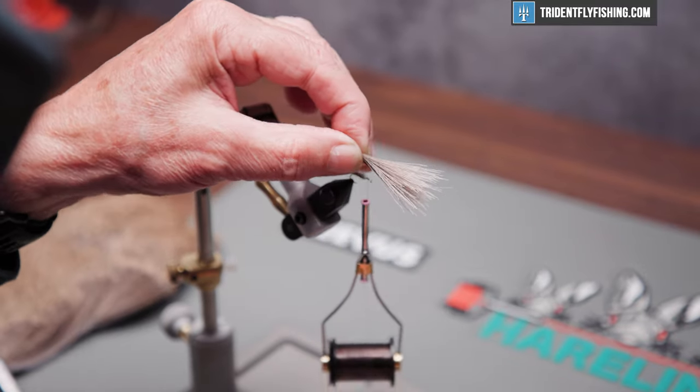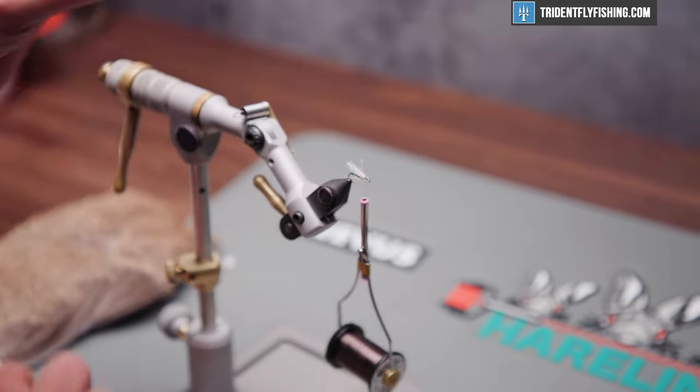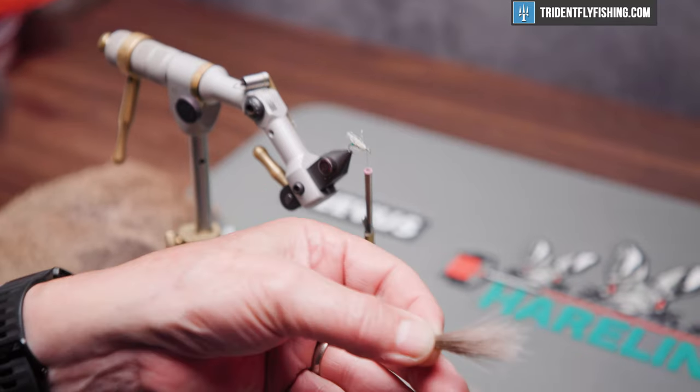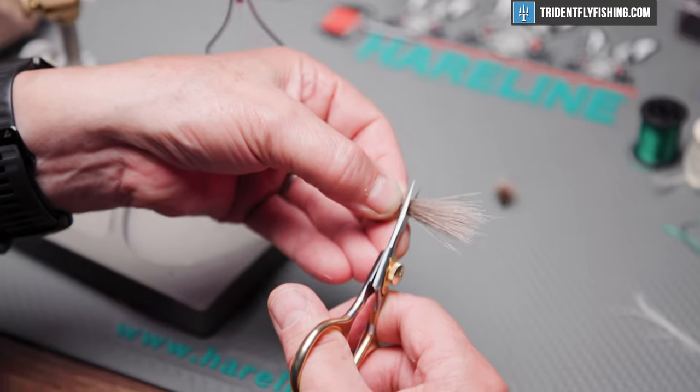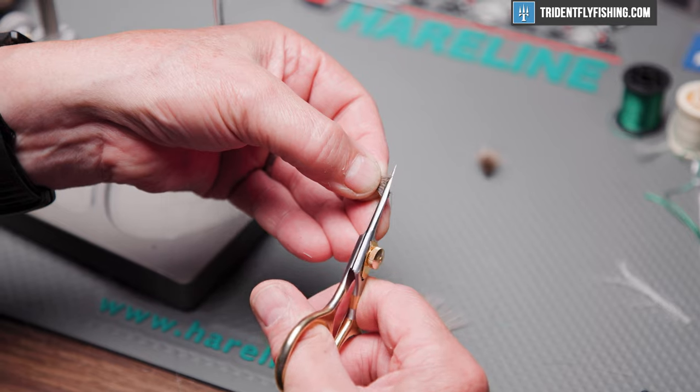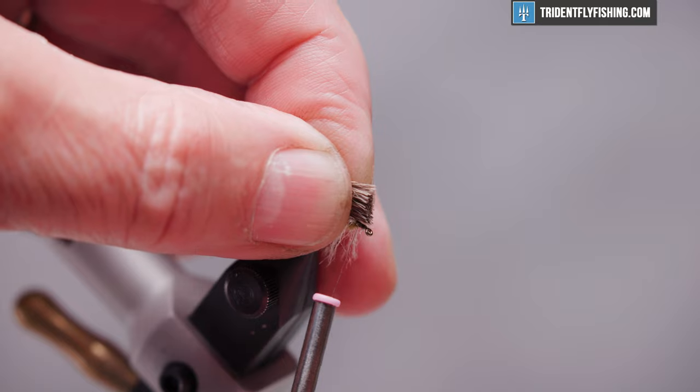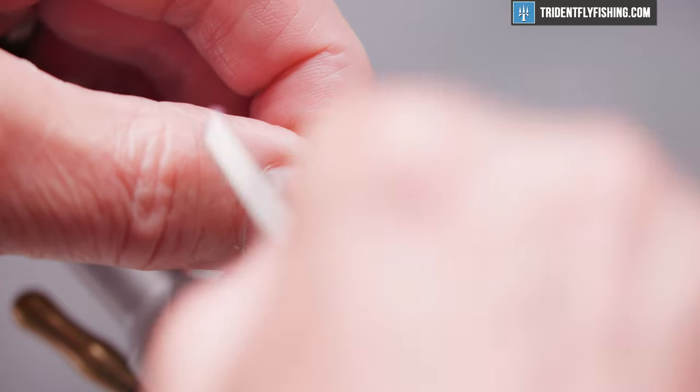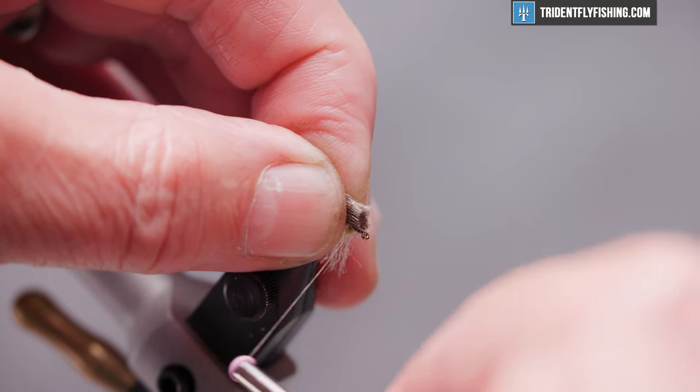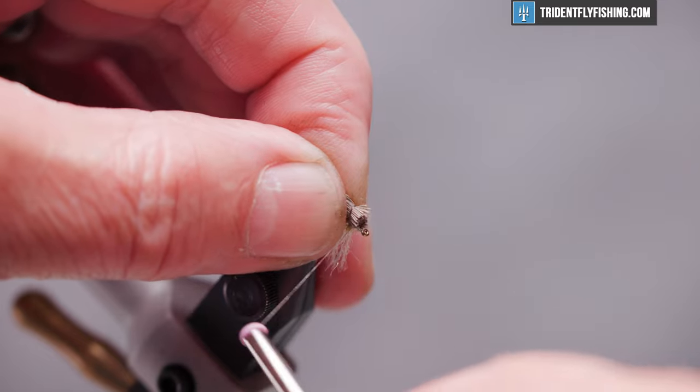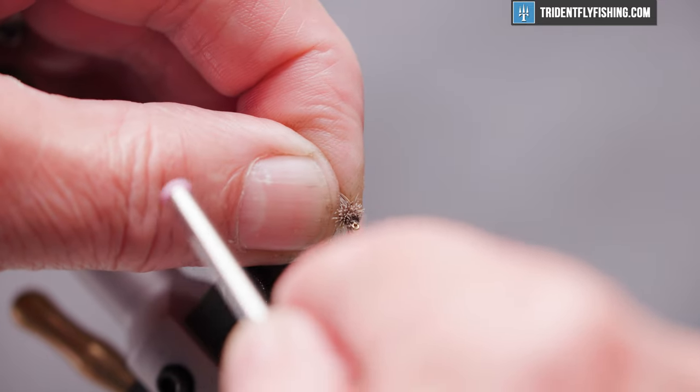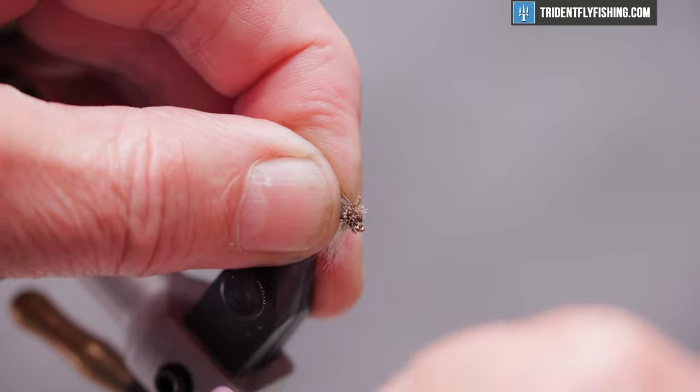And I like a sunburst head on my flies versus the flathead you see on a lot of caddis flies. So we're going to measure that out just to the eye of the hook. Take a couple of turns and then pull tight. Hanging on to the deer hair, it'll stay right on top.